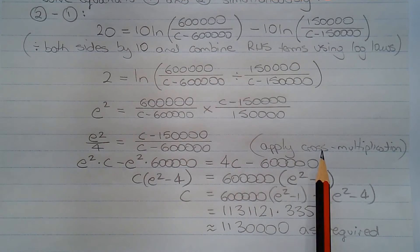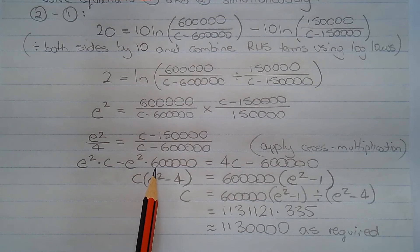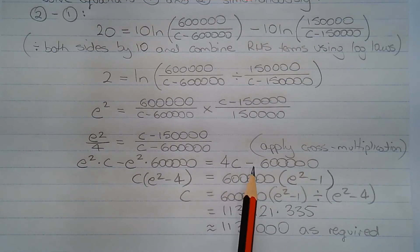Next we apply cross multiplication, so we're going to make c the subject of the formula eventually. So we have e squared times c minus e squared times 600,000 equals 4c minus 600,000.